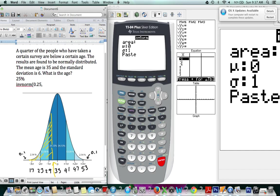The next value that we'll enter is our mean. And in this question, our mean is 35. And finally, our last value that will be entered is our standard deviation, which in this case is 6.